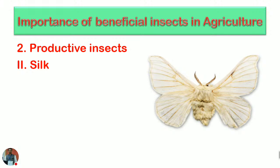The next productive insect is the silkworm, from which silk is obtained. This silk is natural, of animal origin, and many products are made from it — parachutes, sarees, and many other fabrics and artifacts. The byproducts from silkworms are also utilized in feeding and as a rich source of protein from the pupae of silkworms.